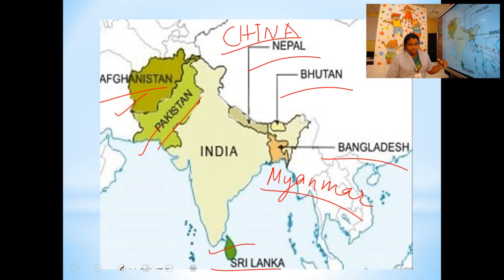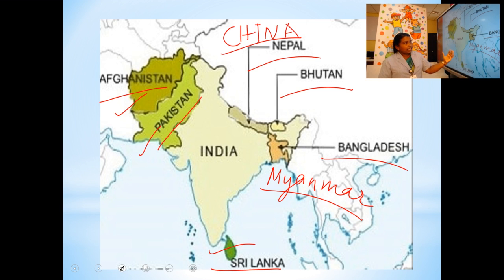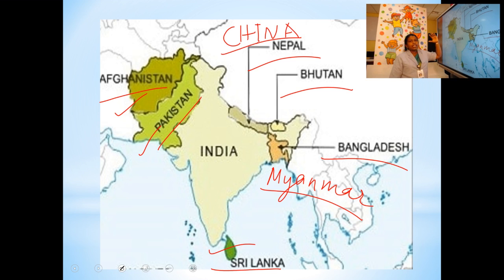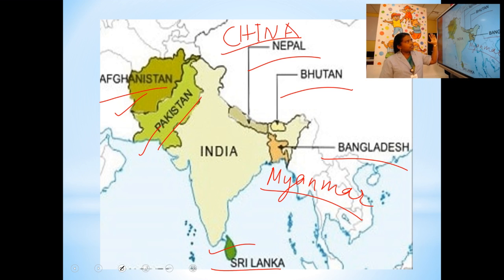Which are the neighboring countries of India? China, Nepal, Bhutan, Bangladesh, Myanmar, Sri Lanka, Afghanistan, and Pakistan — these are the neighboring countries of India.